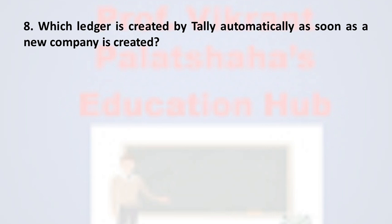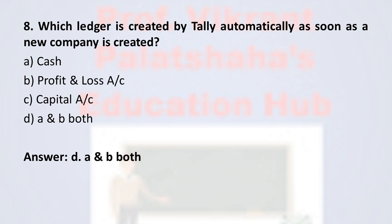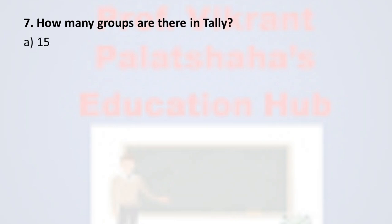Question number seven: Which ledger is created by Tally automatically as soon as a new company is created? Option A: Cash, Option B: Profit and Loss Account, Option C: Capital Account, Option D: Both A and B. The correct option is Option D, Both A and B. Whenever a new company is created in Tally, Cash Account as well as Profit and Loss Account are automatically created, therefore the correct option is Option D.